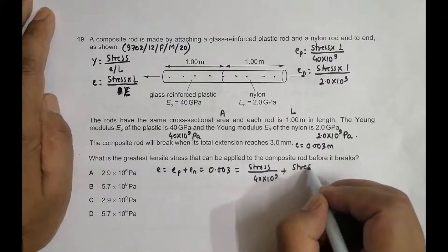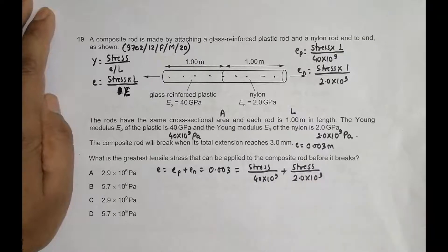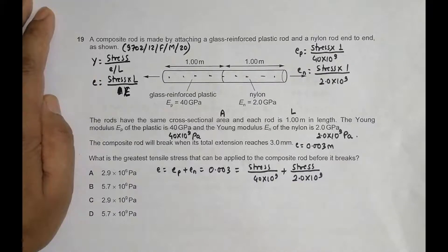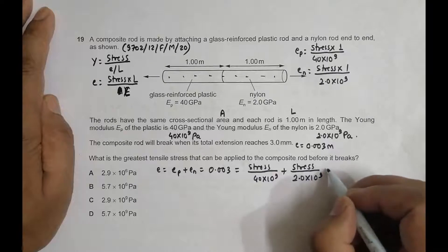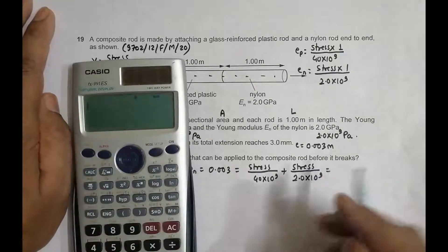stress/(40×10⁹) plus stress/(2.0×10⁹). When we add these and find the common denominator, the right side equals...